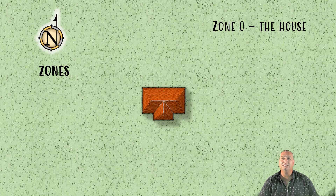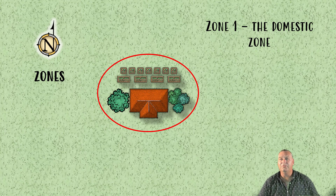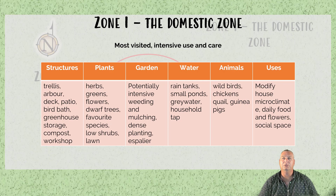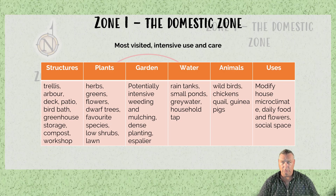From there we move outside into zone 1, which is our domestic zone. It's where we grow most of the bits and pieces that we need, and that we visit on a very regular basis — anywhere up to four to five times a day. Zone 1 is the most visited, with intensive use and care. Structures that could be within that space include a trellis or arbor, a deck, a patio, a birdbath, a greenhouse, storage, compost, or even a workshop we go to on a daily basis.